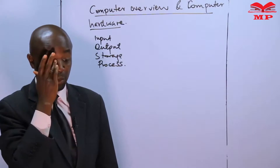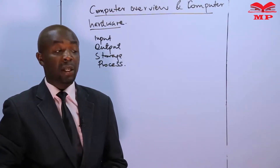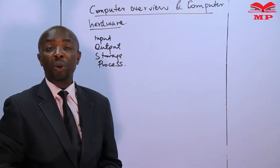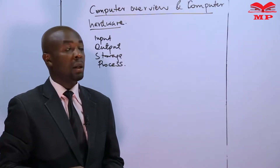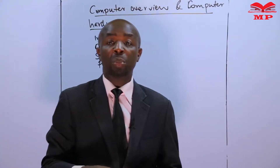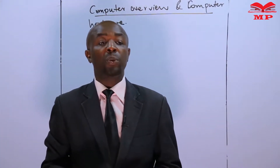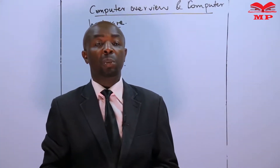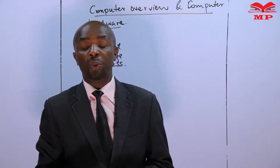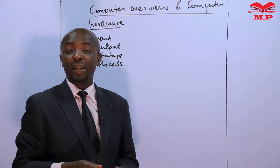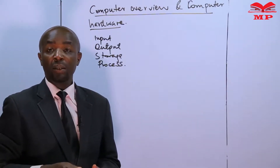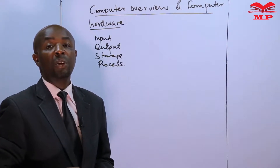We define a computer system as an electronic device that enables computer users to input data. That input data is processed, and after it has been processed, it gives an output, which is normally called information. That output may not be used immediately, or may be used immediately. If it is not used immediately, then it will be stored in a storage medium.